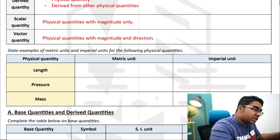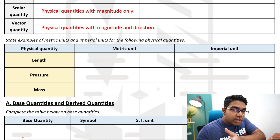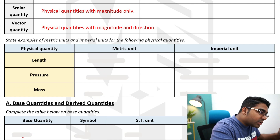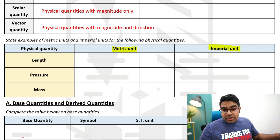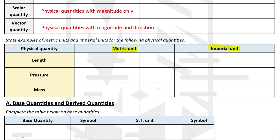When it comes to physical quantities, we have the magnitude of the quantity and the unit. We have two systems of units: the metric system and the imperial unit system. For length, for example, the metric system uses units like centimeters, meters, kilometers, and millimeters. But in the imperial system we use units such as inch, feet, and miles.